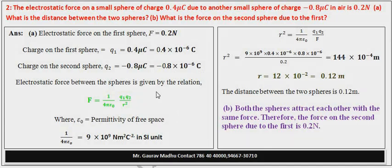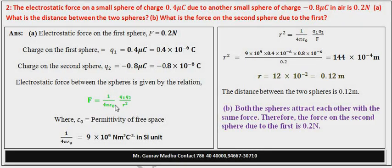दोनों sphere के बीच force का formula होता है: F = 1/(4πε₀) × Q1Q2/R². इसी 1/(4πε₀) को हम K भी बोलते हैं — यह electrostatic constant होता है, जिसकी value होती है 9 × 10⁹ newton meter square per coulomb square।